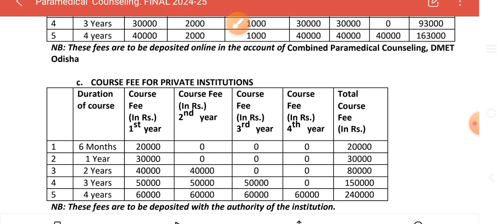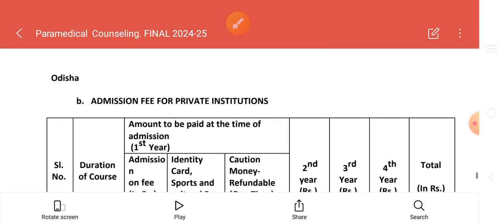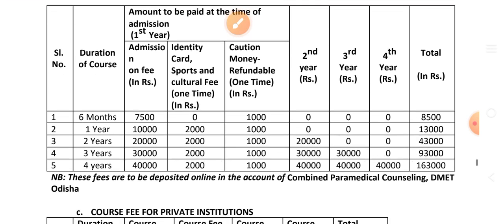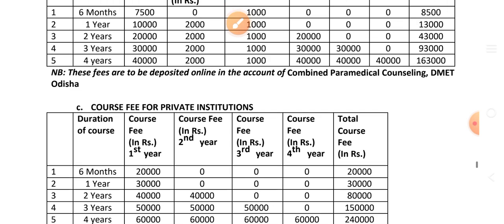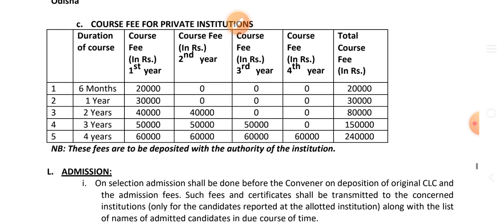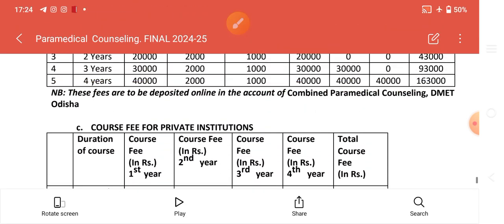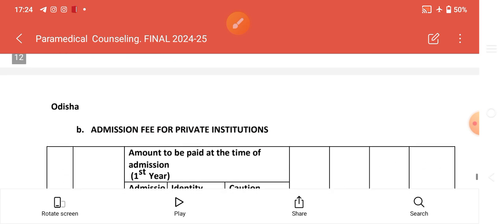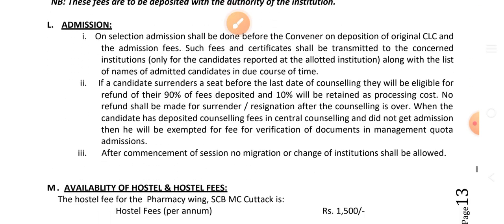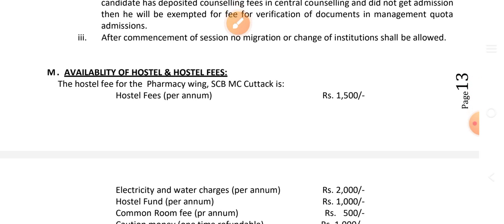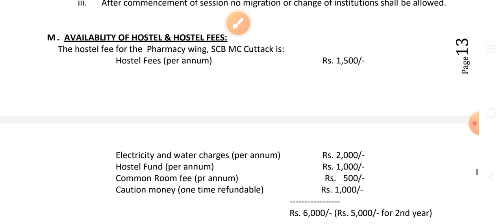The fee is defined for DMET counseling. Admission fee and course fee details are available in the PDF. Hostel fees: ₹15,000 per annum; electricity and water charges ₹2,000; hostel fund ₹1,000 per annum; common room fee ₹500; and caution money refundable deposit ₹1,000.